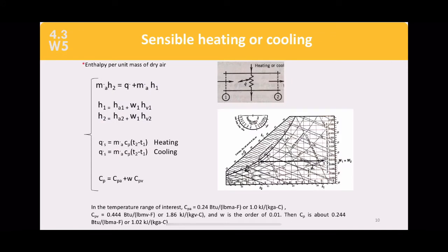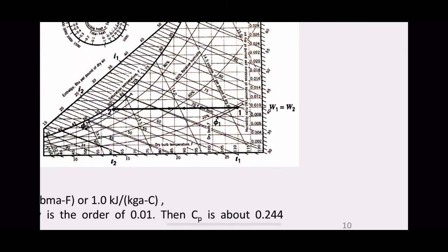For sensible heating or cooling, you can use either equations or the psychrometric chart. In the final exam, if a psychrometric chart is given, students are asked to use it. Sensible heating or cooling is an increment or decrement of temperature — moving right to increase, left to decrease — without adding humidity. Therefore, humidity at State 1 equals humidity at State 2.